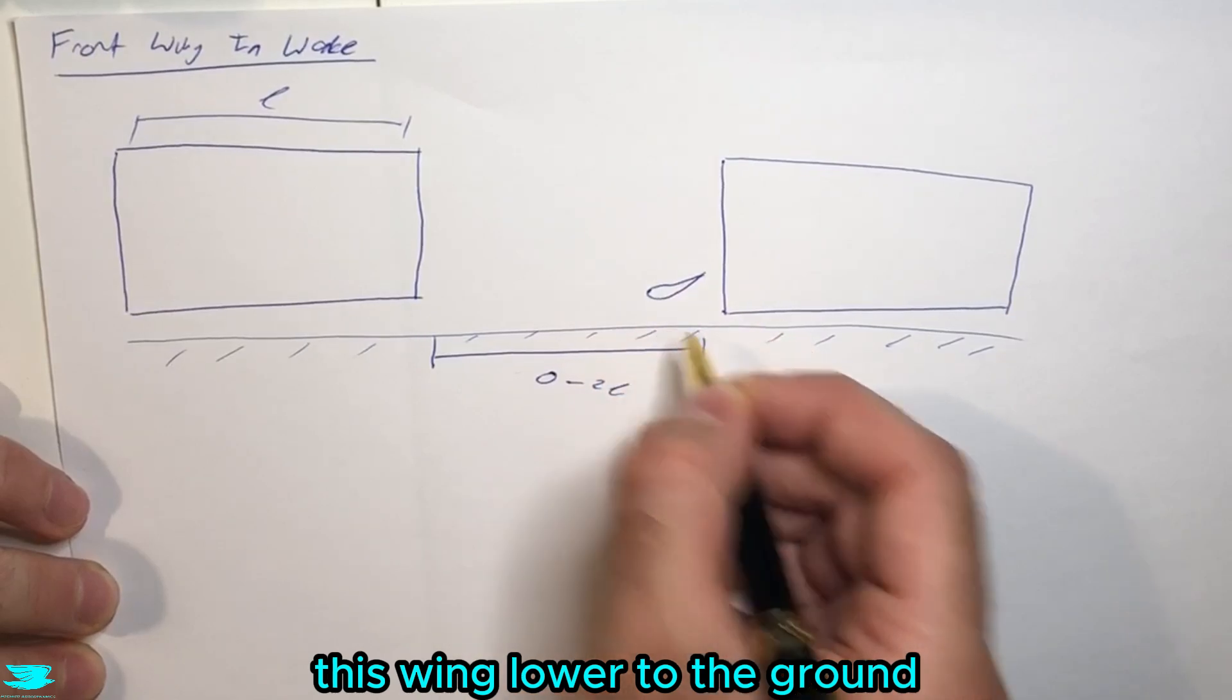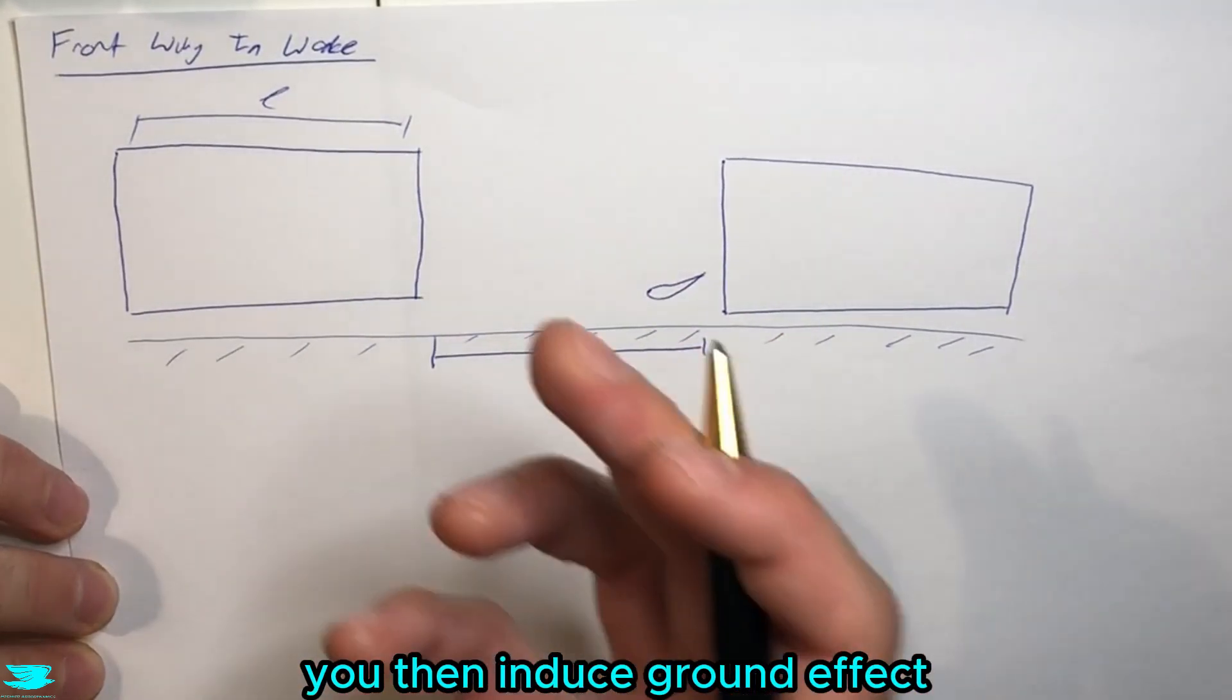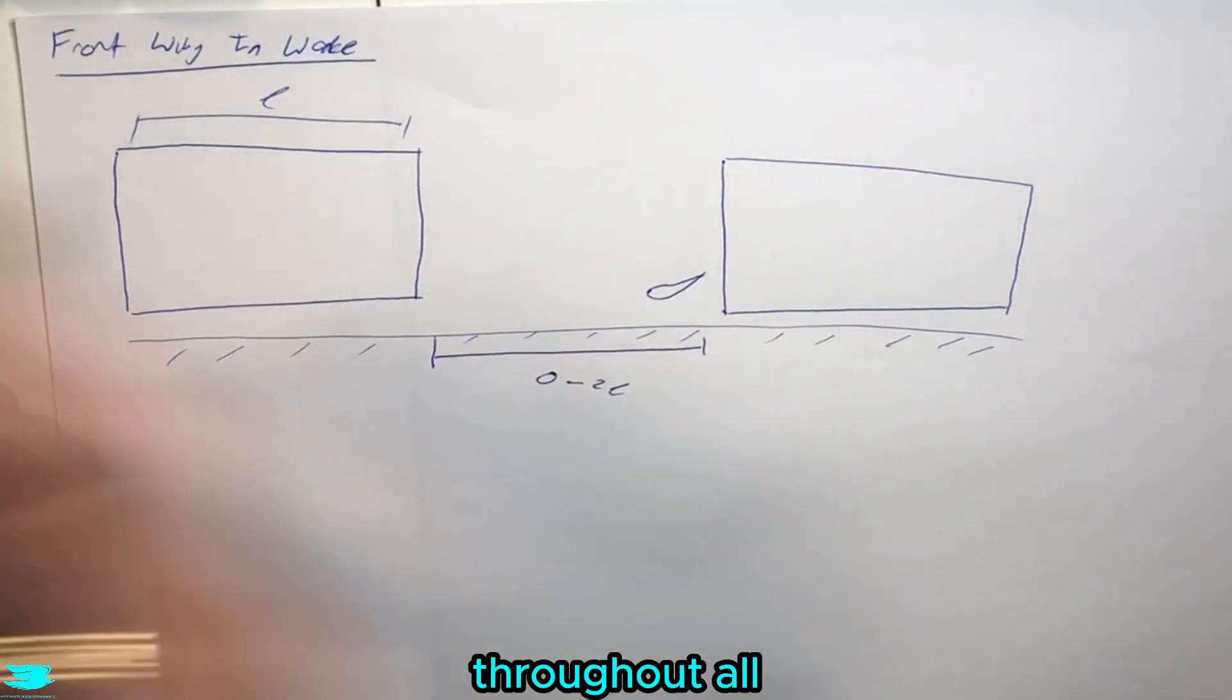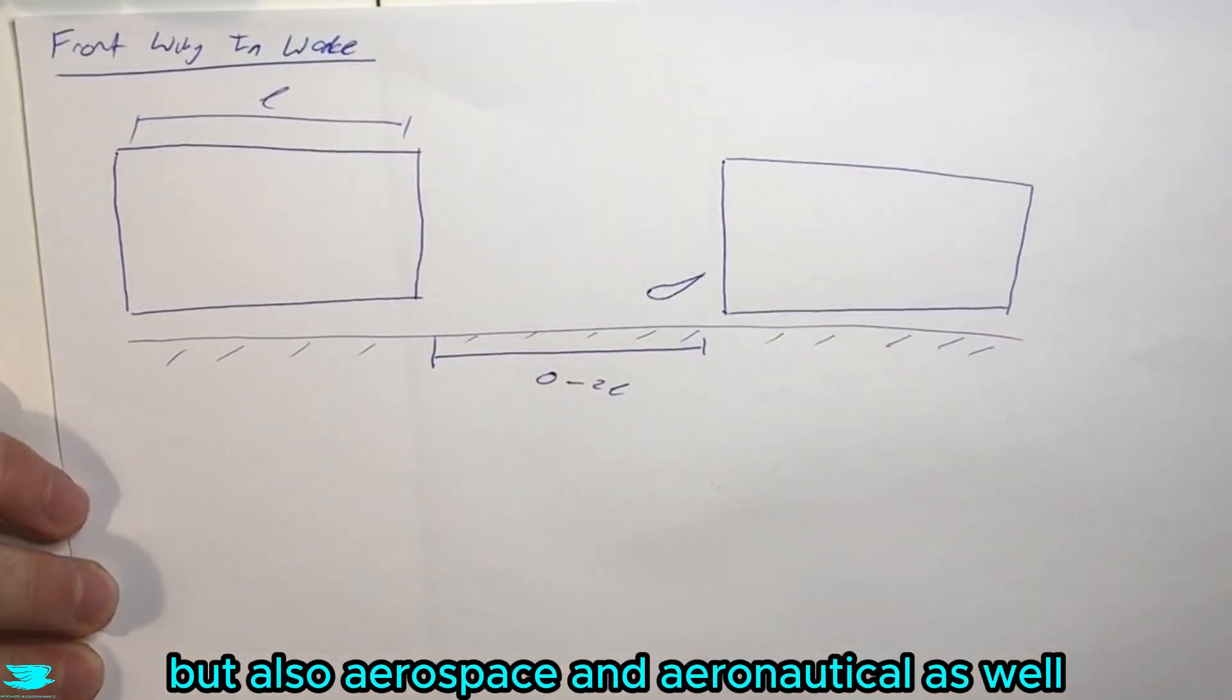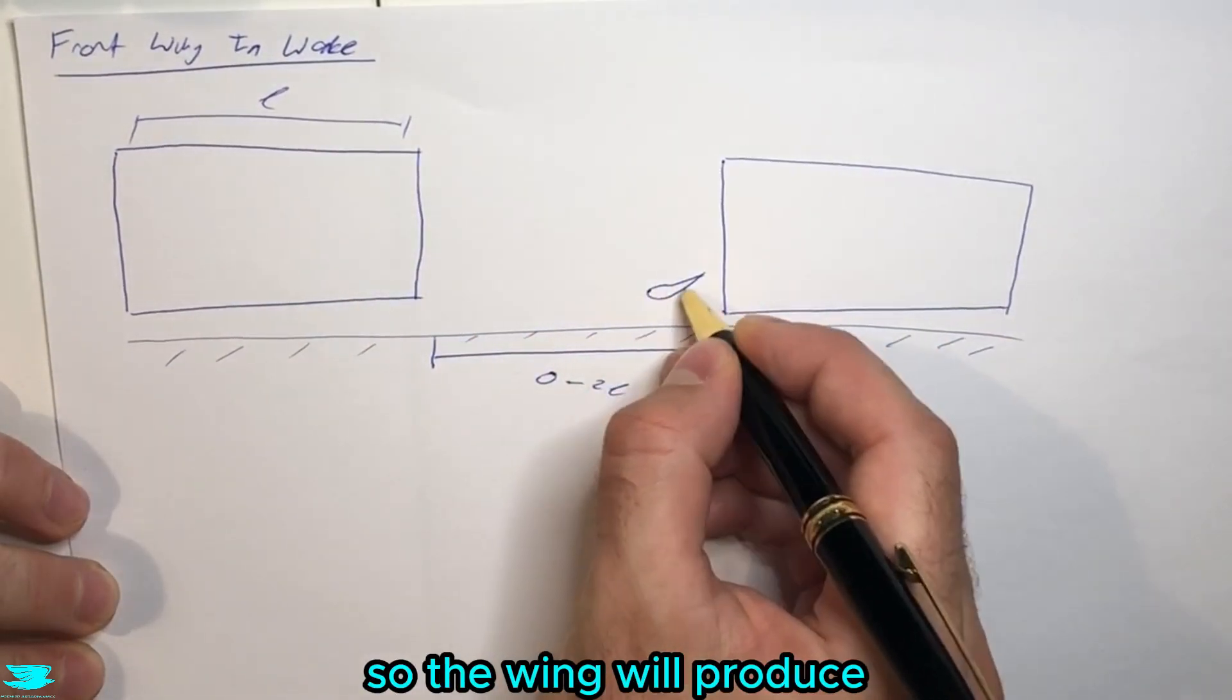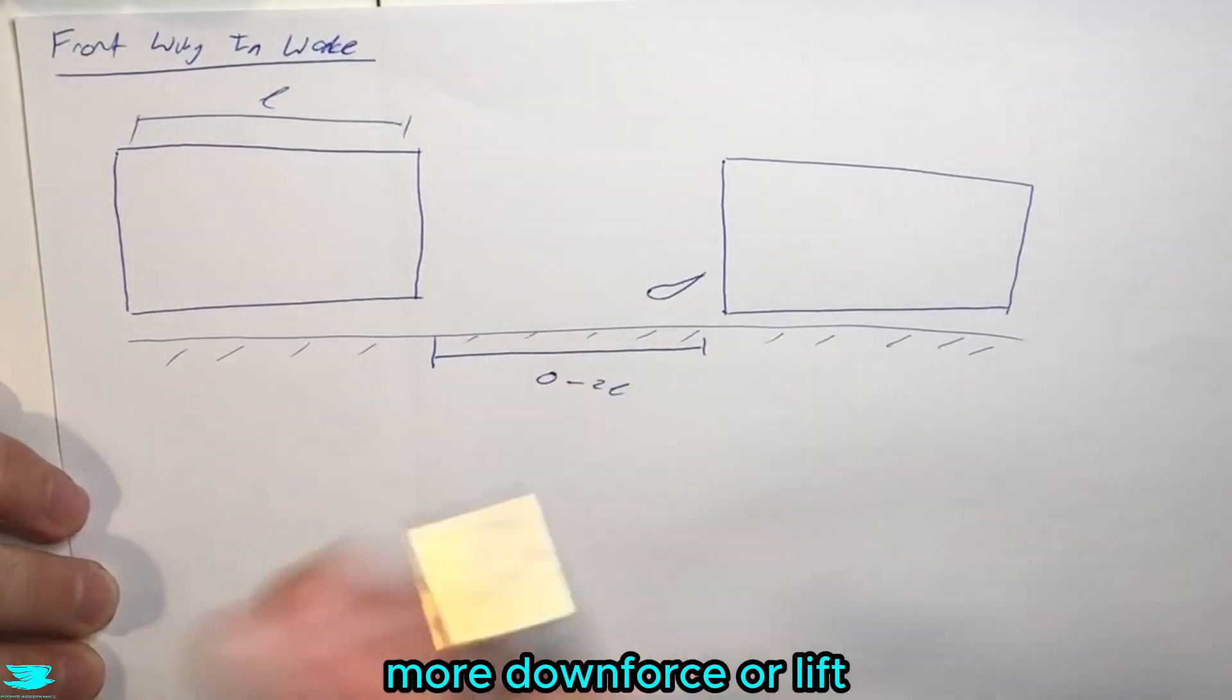If you didn't have anything upstream and you just put this wing lower to the ground, you then induce ground effect, which is a common phenomenon throughout all aerodynamics, not just automotive but also aerospace and aeronautical as well.